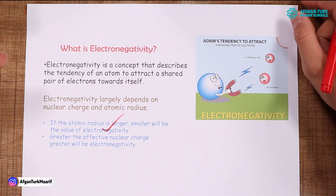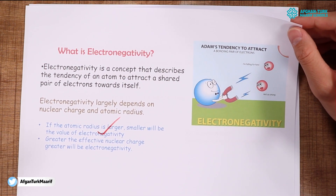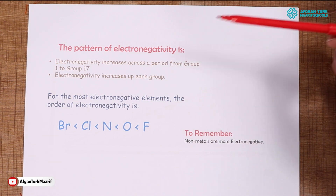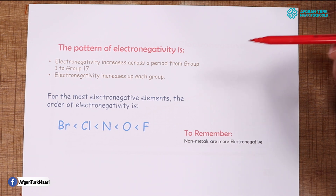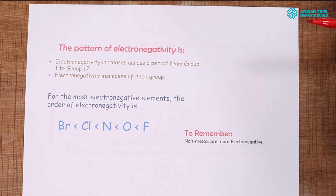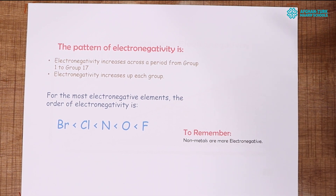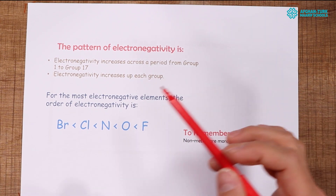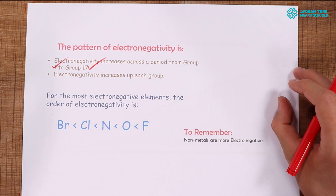We have defined electronegativity — now let's look at the pattern in the periodic table. There are 18 groups in the periodic table, but the last group, the 18th, are the noble gases; they do not react, so we cannot define electronegativity for them. We can define electronegativity from group 1 until group 17.